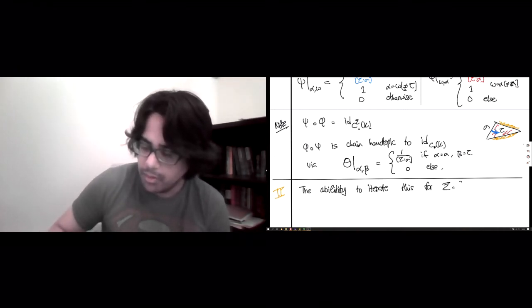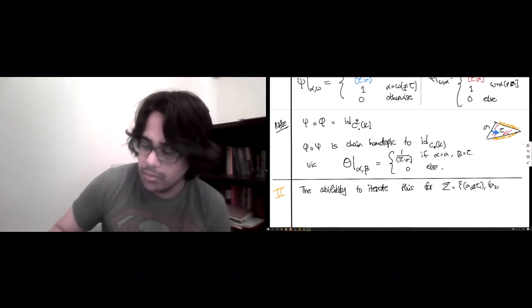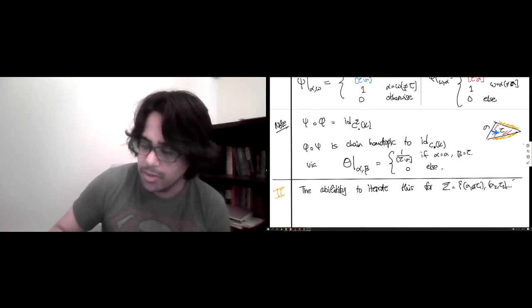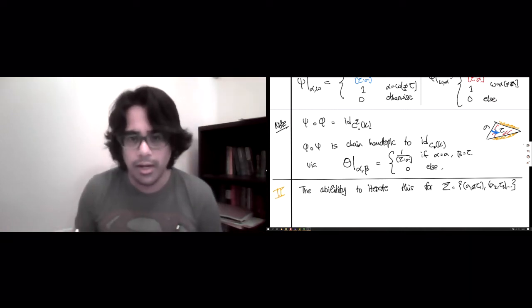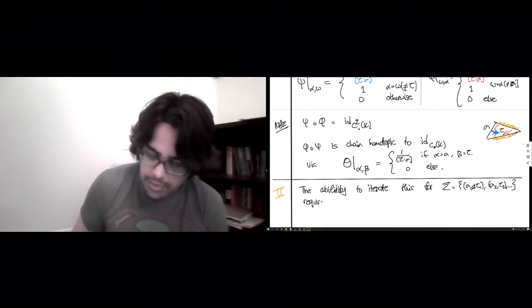so, for sigma equals, you know, lots of sigma 1, tau 1, sigma 2, tau 2, you know, larger partial matchings, doing this one at a time requires acyclicity of sigma.